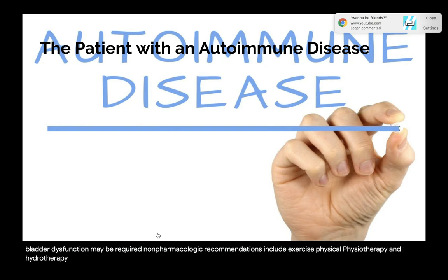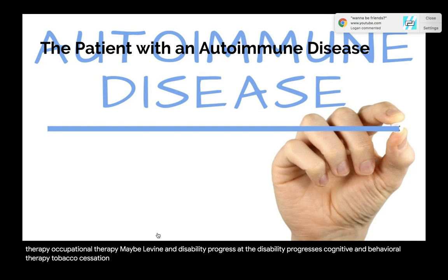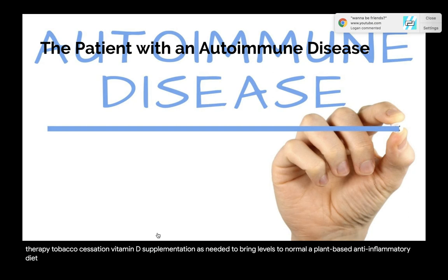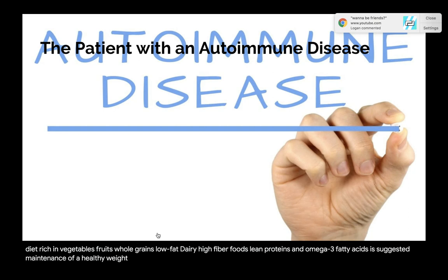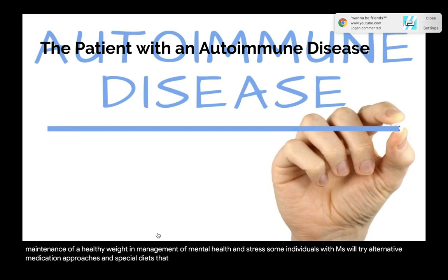Non-pharmacological recommendations for MS include exercise, physiotherapy, hydrotherapy, and occupational therapy to assist with activities of daily living as disability progresses. Cognitive and behavioral therapy, tobacco cessation, and vitamin D supplementation are recommended. A plant-based anti-inflammatory diet rich in vegetables, fruit, whole grains, low-fat dairy, high-fiber foods, lean proteins, and omega-3 fatty acids is suggested. Maintain healthy weight and manage mental health and stress. Some individuals may try alternative approaches or special diets without good evidence that may cause harm such as malnutrition.